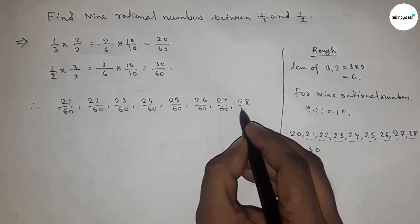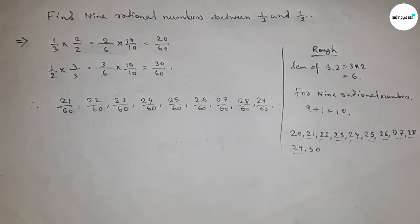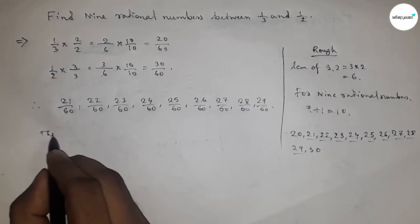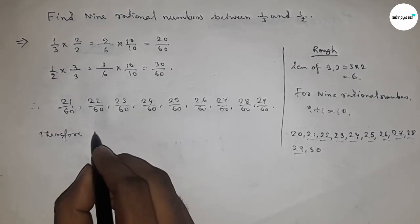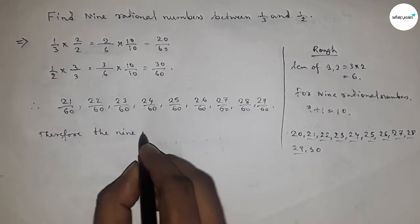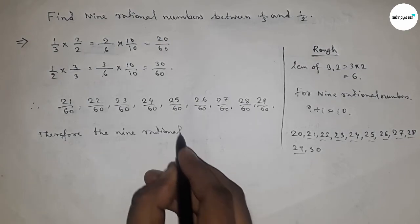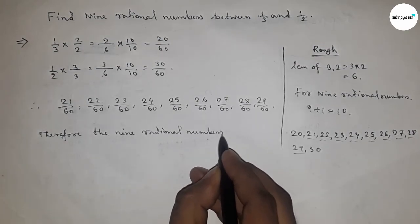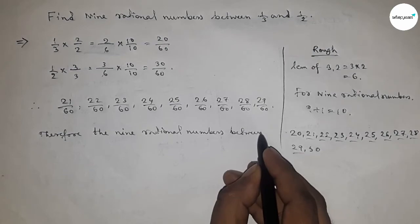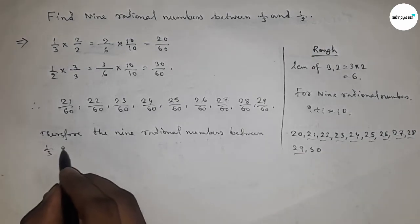28/60, and 29/60. These are the nine rational numbers between 1/3 and 1/2. Therefore, the nine rational numbers between 1/3 and 1/2 are from 21/60